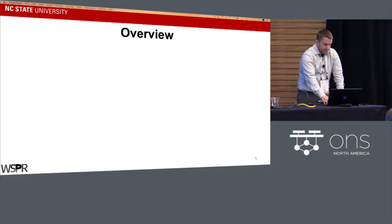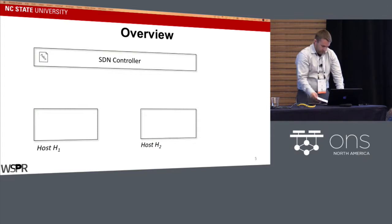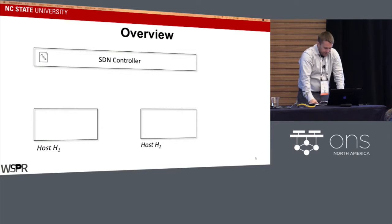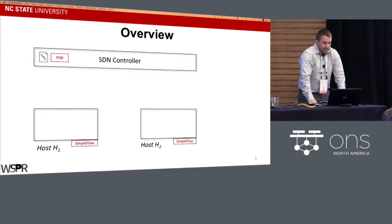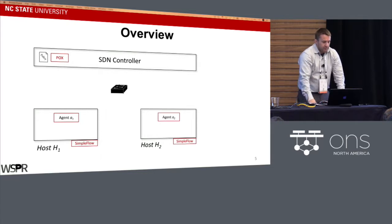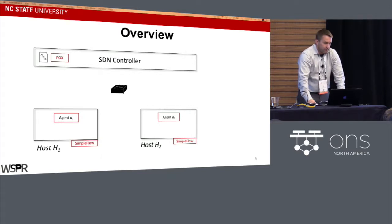In our broad overview, PivotWall broadens the enforcement of secrecy by establishing information controls at the SDN controller. We implemented our security application using the POX interface. On the hosts, we utilized the CamFlow kernel — a provenance-aware kernel for Linux. We then built an agent that simplified communication between hosts protected by the CamFlow kernel and our SDN controller.